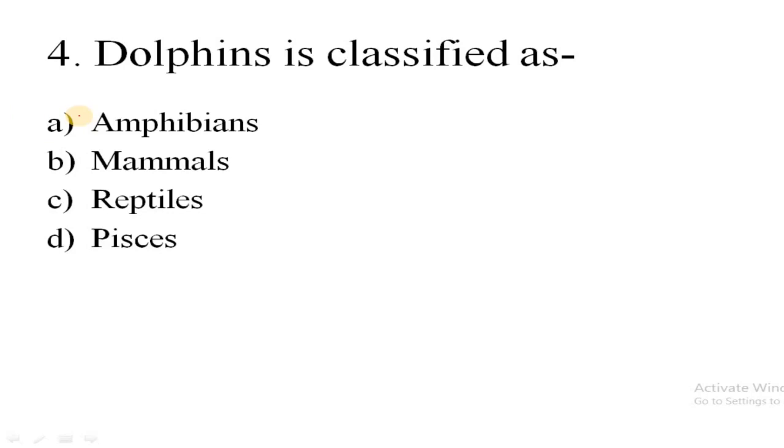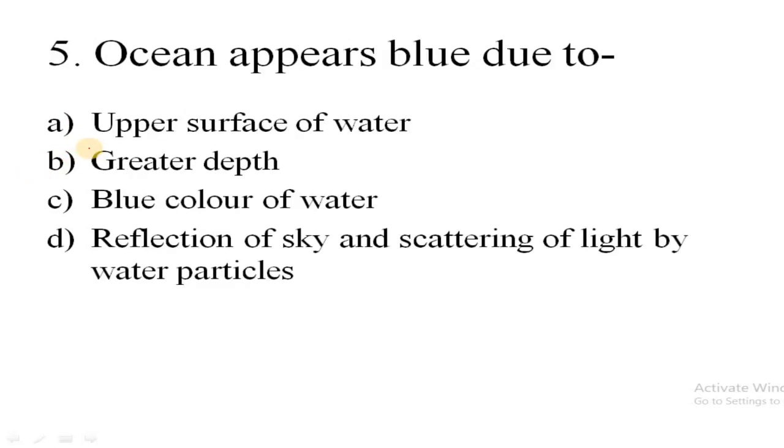Question is, ocean appears blue due to: option A upper surface of water, B greater depth, C blue color of water, D reflection of sky and scattering of light by water particles. Here D is the correct answer, that is the reflection of sky and scattering of light by water particles.